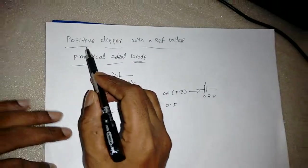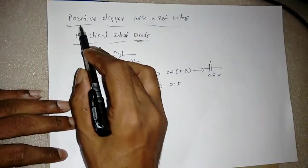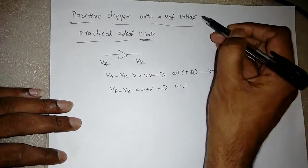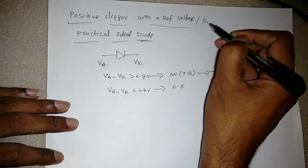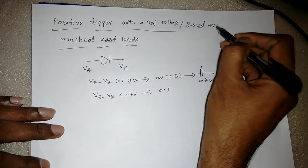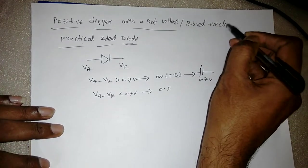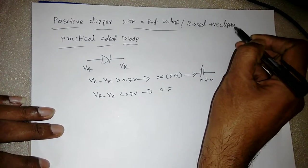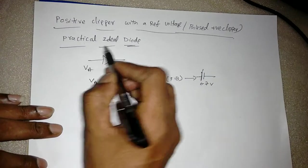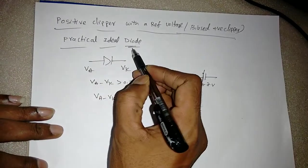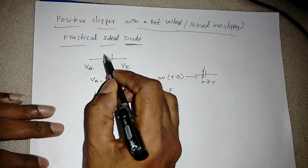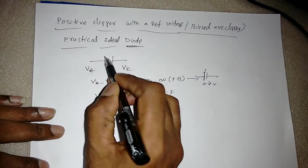In this lecture we will see positive clipper with a reference voltage, or biased clipper. For a practical diode — in the previous lecture we saw the ideal case — now we will see the practical case.